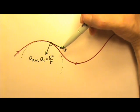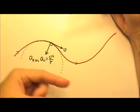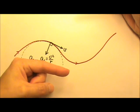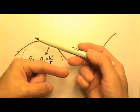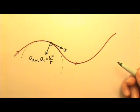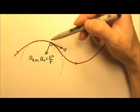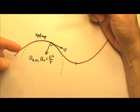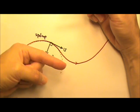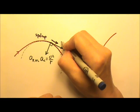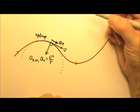So what about the thing we used to say: if an object is speeding up, the acceleration and the velocity are in the same direction. If an object is slowing down, the acceleration and the velocity are opposite. Well, that is still true — it just involves a different acceleration. Say when the object is here and it is speeding up, the acceleration that is in the same direction as the velocity would be tangent to the path. We can call that tangential acceleration.